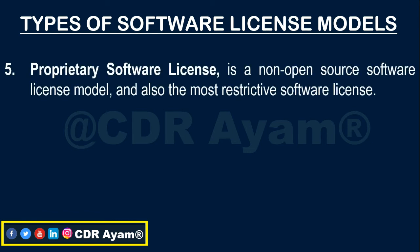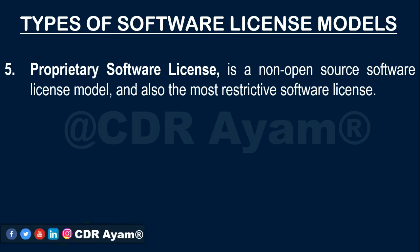The last type of software license model, which also happens to be the only non-open source software license, is the Proprietary Software License. The Proprietary Software License is the most restrictive software license. The idea behind it is that all software rights are reserved, and as a result, such software may not be modified or redistributed by a third party. I advise you to always make sure that a software you seek to crack or bypass its licensing requirement is an open source software and not one with a Proprietary Software License, since the owner can sue you in a law court for modification or redistribution of their software without approval.